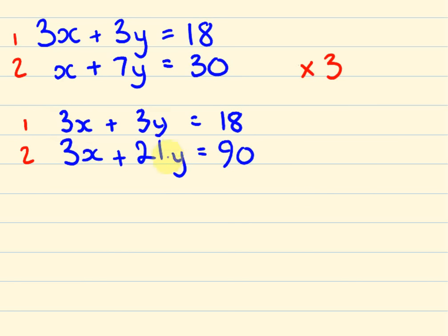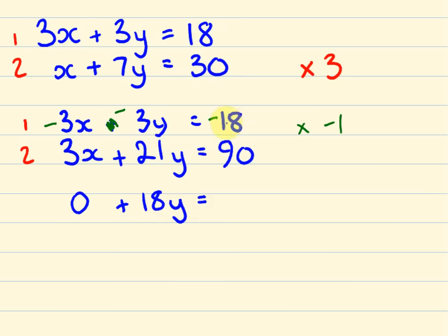The next thing is to look at the coefficients of the other variables. This one's the smaller one, so we're going to multiply that equation by minus 1. So those all become minus. So: 3x take away 3x gives us 0; 21y take away 3y gives us 18y; and 90 take away 18 gives us 72. What number do you times 18 by to get 72? Well, 72 divided by 18 gives us y equals 4.